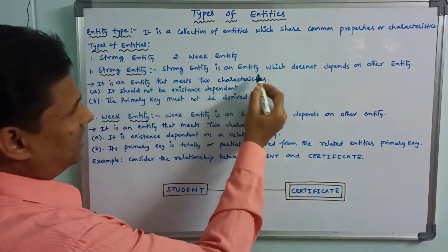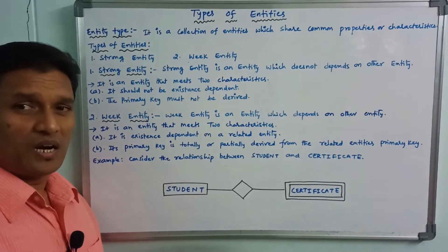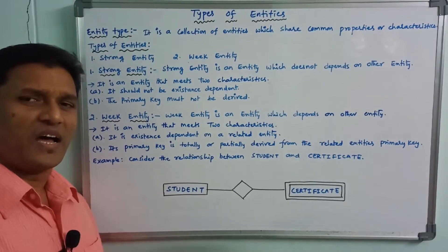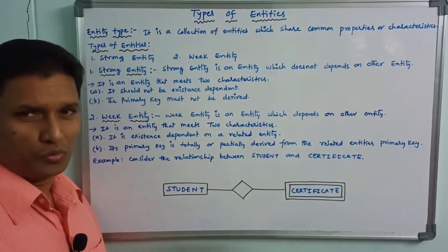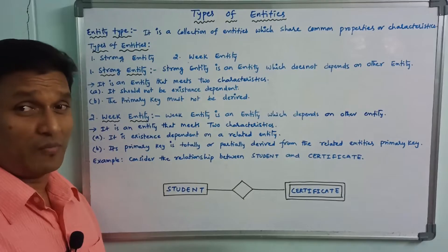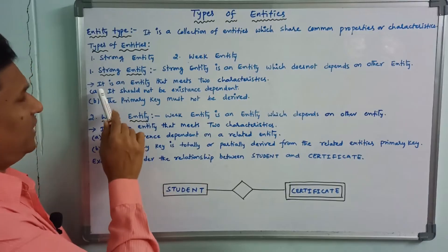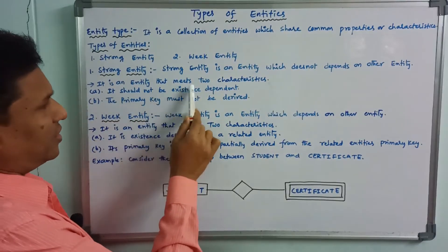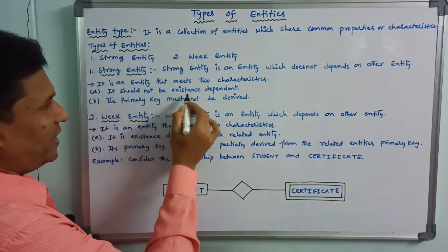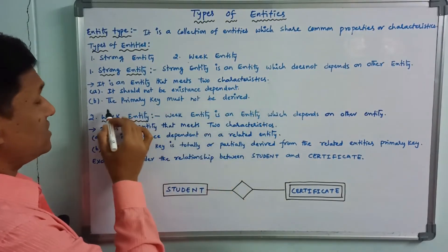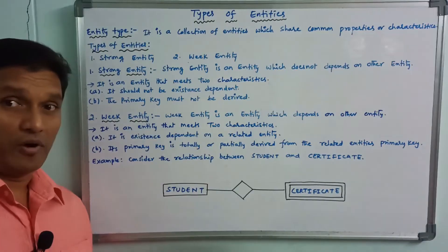First, let us see what a strong entity is. A strong entity is an entity which does not depend on another entity. It has two characteristics: first, it should not be an existing dependent; second, the primary key must not be derived.